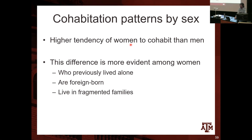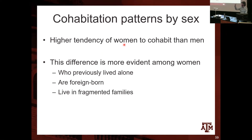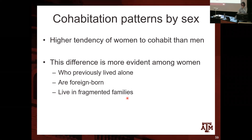Women are more likely to cohabit, which can be a bad sign in societies where cohabiting women tend to have lower education and earnings than men. This difference is more evident among women who previously lived alone, who are foreign-born and don't have much social network in the country they move to, and who live in fragmented families. All these different family dynamics affect the marital status of people later in life.